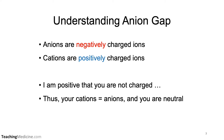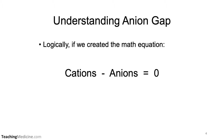Anions are negatively charged ions. Cations are positively charged ions. And I am positive that you are not charged. Therefore, your cations equal the number of your anions, and you are electrically neutral. Logically, if we created the math equation cations minus anions, we would expect that the answer would be zero.